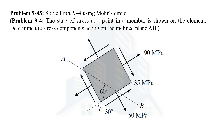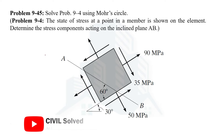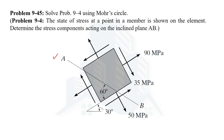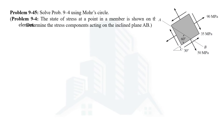Hello everyone. In this video we are going to solve problem number 45 from chapter stress transformation, which is chapter 9 in the book Mechanics of Materials by R.C. Hibbeler. In this problem we are given a current state of stress on an element and are asked to calculate the stress components acting on inclined plane AB. This problem is the same as problem number 44, but number 45 is to be solved using Mohr's circle.